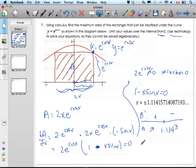Therefore, it says find the maximum area. So x is going to be 1.11416. If I want to find the maximum area, area will be 2 times 1.11416 times e to the cosine of 1.11416.